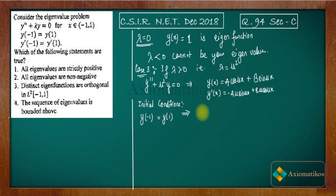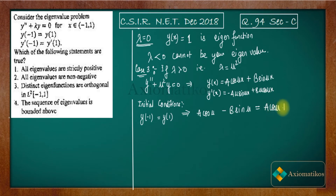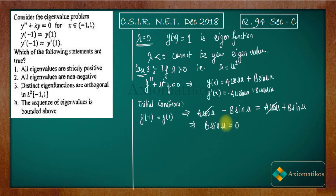The boundary conditions are y(−1) = y(1). Substituting x = −1 on the left-hand side: cos(−μ) = cos(μ), and sin(−μ) = −sin(μ). On the right-hand side: a·cos(μ) + b·sin(μ). After cancelling a·cos(μ) from both sides, we obtain b·sin(μ) = 0.